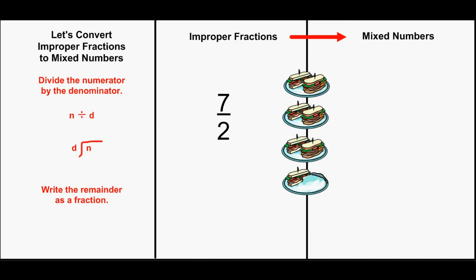Here, I have the improper fraction 7 halves. 7 divided by 2 will give us the mixed number. Let's try it.